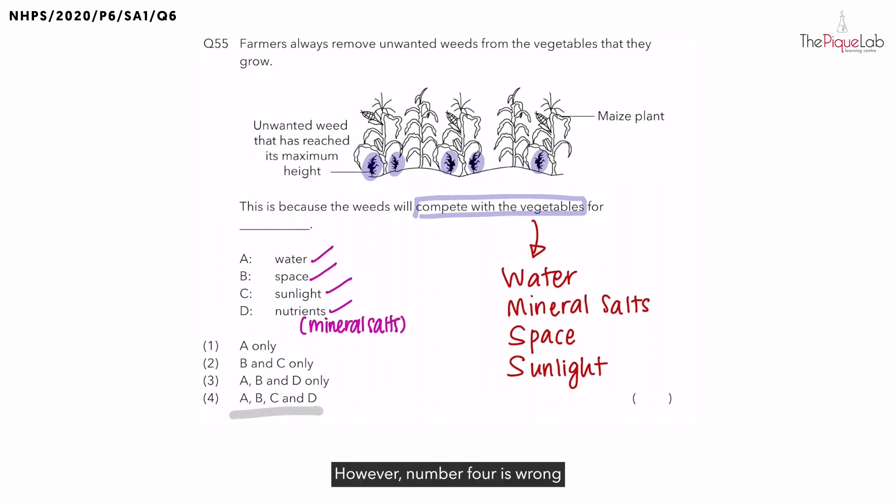However, number four is wrong because look at this question specifically. If the weeds are there together with the maize plants, yes, they are all going to compete for water, which is found underground.